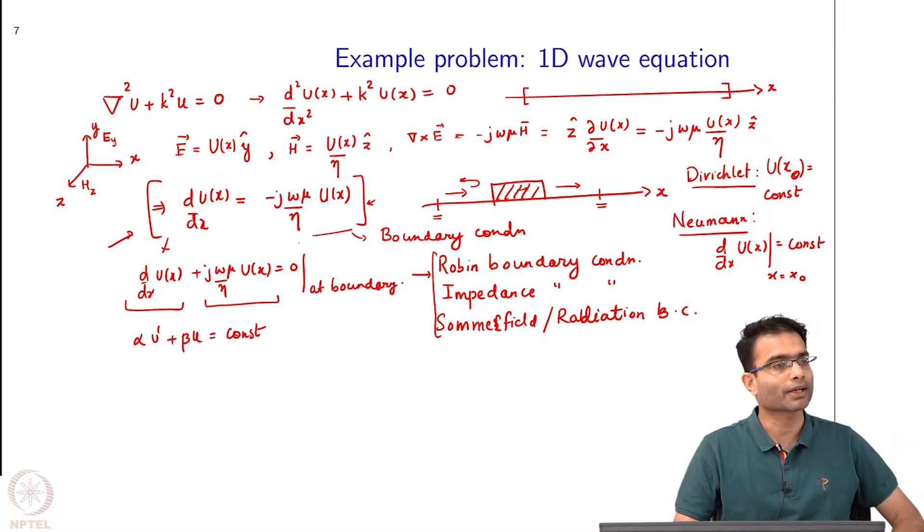This boundary condition is very important in almost all electromagnetic scattering problems. In one D it looks very simple - the spatial derivative of the field is proportional to the field, that is what it is saying.